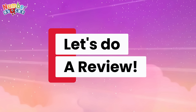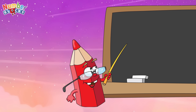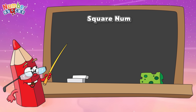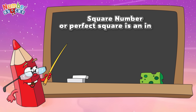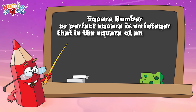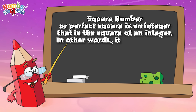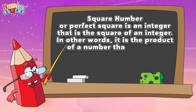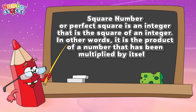Now join me and let's do a review. A square number or perfect square is an integer that is the square of an integer. In other words, it is the product of a number that has been multiplied by itself.